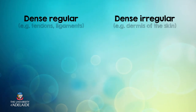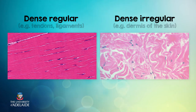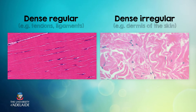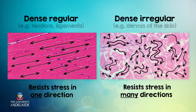We already know that dense connective tissue is found in our mouth. But dense regular connective tissue is also found in tendons that connect muscle to bone, and in ligaments that connect bone to bone, such as in the bones of our skull. The regular dense connective tissue resists stress in the direction of the fibres, while the dense irregular connective tissue is designed to withstand stress from all directions.